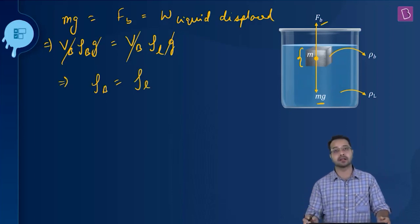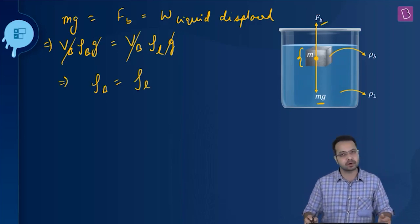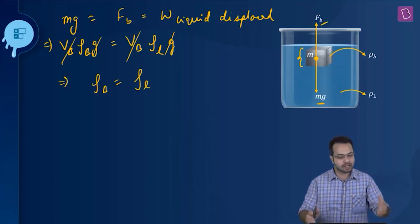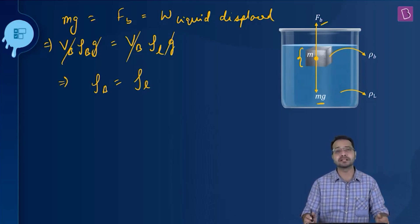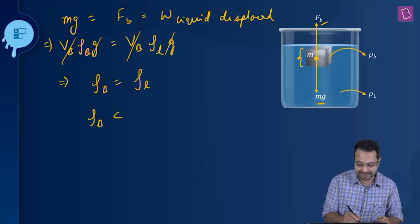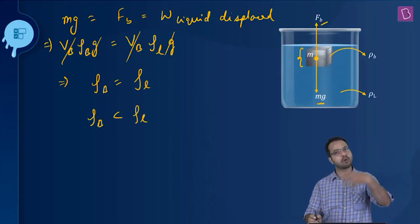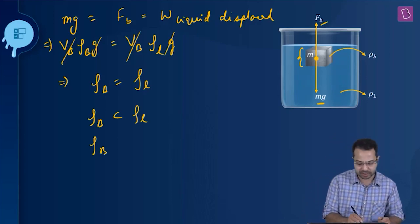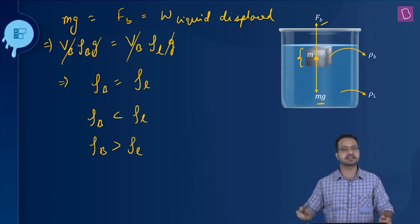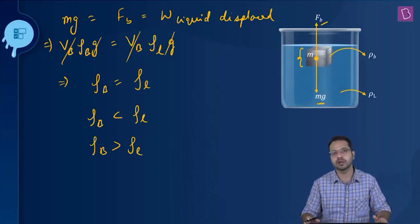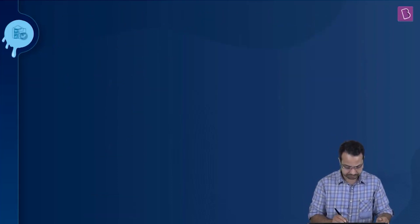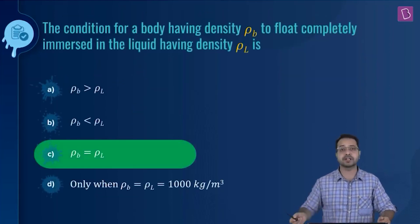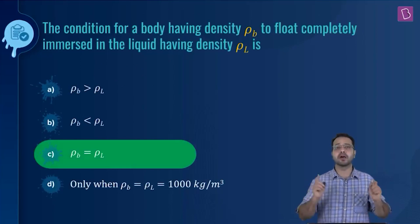So the condition for floating completely immersed is ρ_b = ρ_l. When the body is partially submerged, ρ_b must be less than ρ_l, and when the body sinks, ρ_b must be greater than ρ_l. These are the conditions we should always remember. Looking at the options, option C is the correct answer.